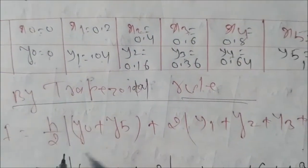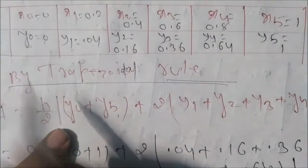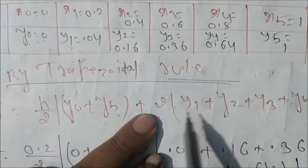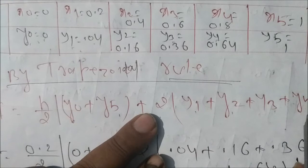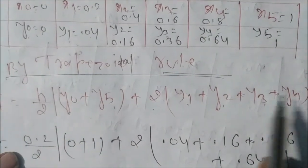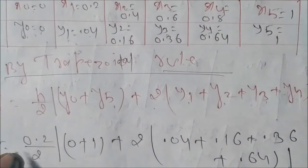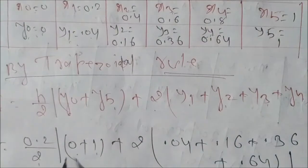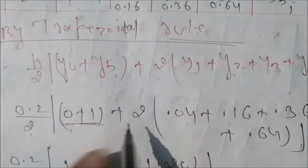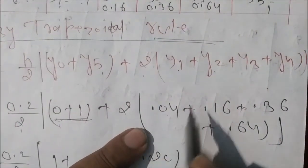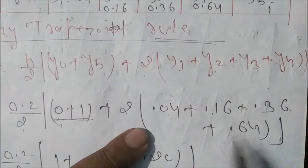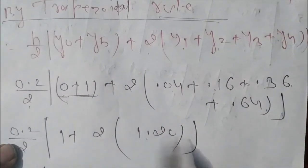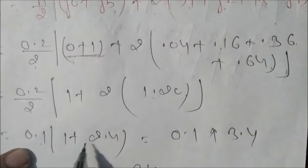I equal to h by 2 (first ordinate plus last ordinate) that is y0 plus y5, plus 2 into intermediate ordinate, that is y1 plus y2 plus y3 plus y4. You put this value equal to 0.2 by 2 (y0 is 0, y5 is 1) which is 0 plus 1, plus 2 into (y1 is 0.04, y2 is 0.16, y3 is 0.36, plus 0.64). After addition you will get 1.20. Therefore 0.1 into (1 plus 2.5), that is 0.1 times 3.5, this will be 0.34.